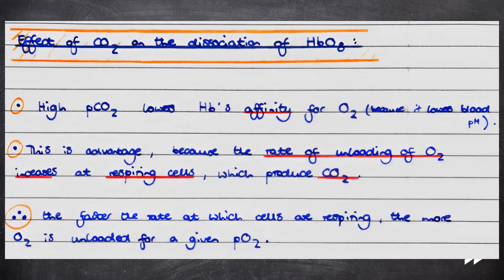Therefore, the faster the rate at which cells are respiring, the more carbon dioxide is produced, and the more oxygen is unloaded for a given partial pressure of oxygen.